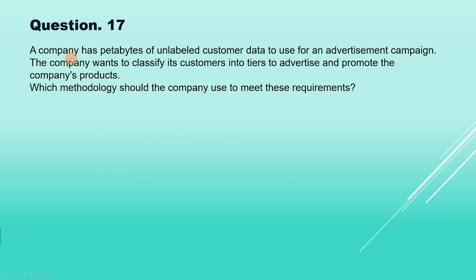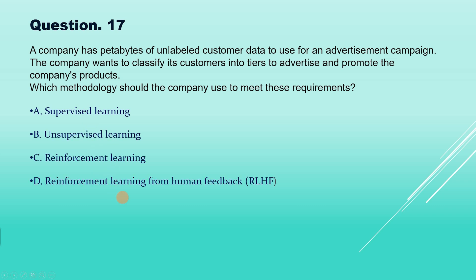Now question number 17. A company has petabytes of unlabeled customer data to use for an advertisement campaign. The company wants to classify its customers into tiers to advertise and promote products. The options are: supervised learning, unsupervised learning, reinforcement learning, reinforcement learning from human feedback. The keyword here is 'unlabeled data.' Wherever unlabeled data is used, it is unsupervised learning. Labeled data means supervised learning, and learning from continuous environmental feedback means reinforcement learning. So the correct answer is unsupervised learning.